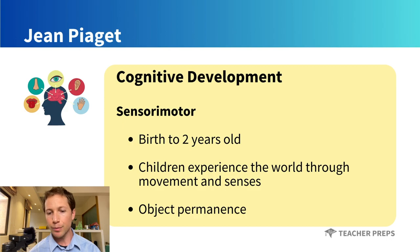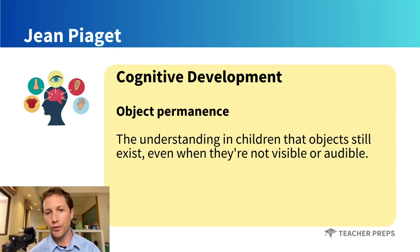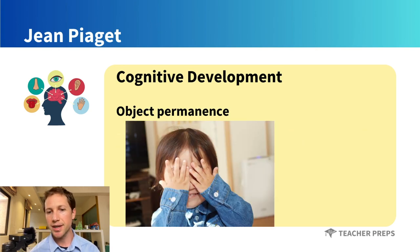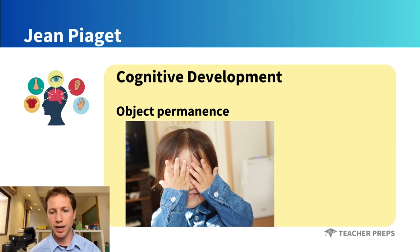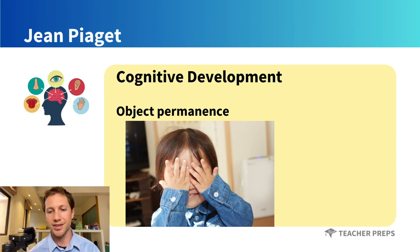Children learn object permanence — the understanding that objects still exist even when they're not visible or audible. This concept is illustrated in young infants who get distressed during games like peek-a-boo, because they're not yet old enough to grasp the concept that the object they were just interacting with still exists when it's out of sight. Object permanence is a term you will very likely see on your Pre-K through 4 exam.